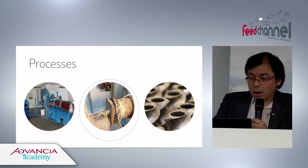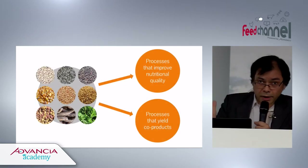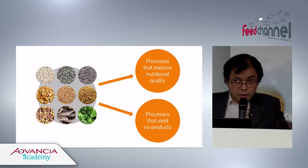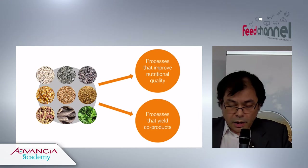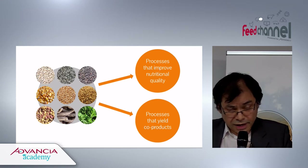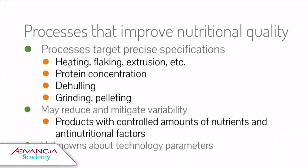Processes are very important. You take the raw grain and there are two kinds of things you can do: apply processes that improve nutritional value, or use the grain to produce food and get a co-product. Processes targeting nutritional quality aim for precise specifications, yielding a product of limited variability and better nutritional value.